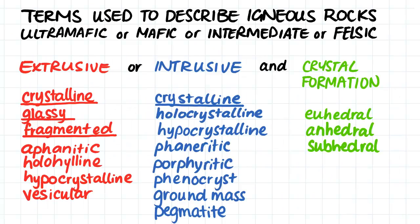In general, rocks can either be ultramafic, mafic, intermediate or felsic, and then they can be classified as crystalline, glassy, or fragmented, which all depends on how the molten rock has cooled and solidified — whether it was an intrusive or extrusive igneous rock.